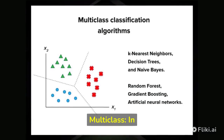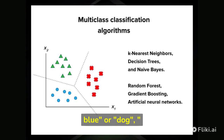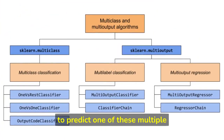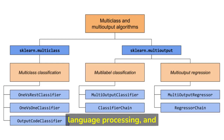In multi-class classification, the target variable can take more than two possible values, such as red, green, blue, or dog, cat, bird. The goal is to predict one of these multiple values based on the input data. Examples of multi-class classification problems include image classification, natural language processing, and speech recognition.